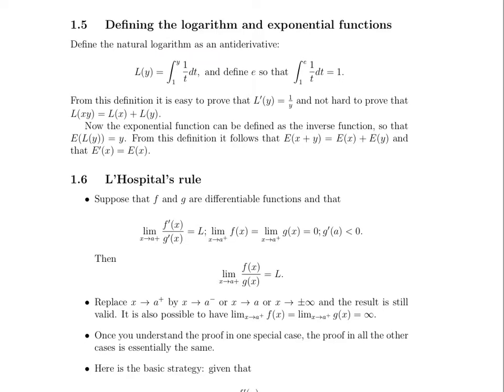Now, the exponential function can be defined as the inverse function, so that we know that e of l of y is equivalently the identity function acting on y, so it returns only y. And from this, it also follows that e of x plus y equals e of x times e of y, and that the derivative of e, the exponential function, is just the exponential function.